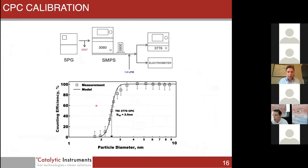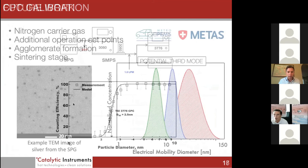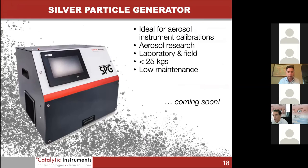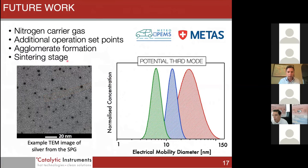Future work entails using nitrogen as a carrier gas to try and examine if silver oxide poses any threat. Additional operational set points as well - I've illustrated here a potential third mode which has done some testing but I don't have data to show today apart from this size distribution. Investigate in more detail agglomerate formation and a possible sintering stage.